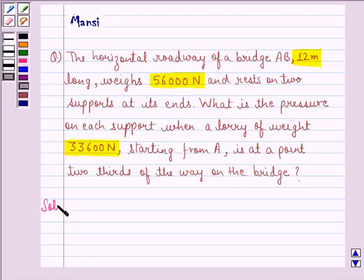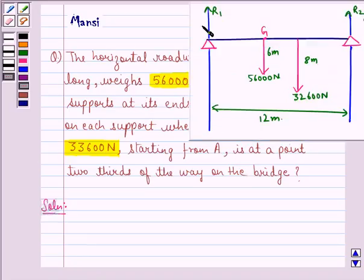Let's start with the solution. This is how we interpret the question. This is the roadway of a bridge AB, 12 meters long. It weighs 56,000 Newton and rests on two supports at its ends, A and B. We have to find the pressure on each support when a lorry